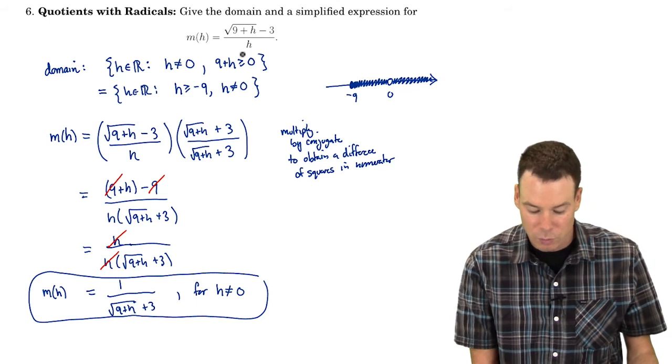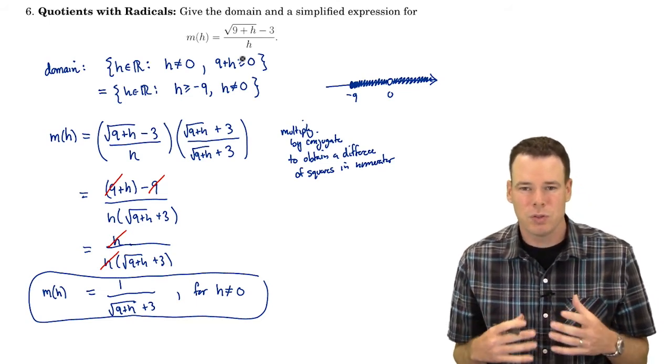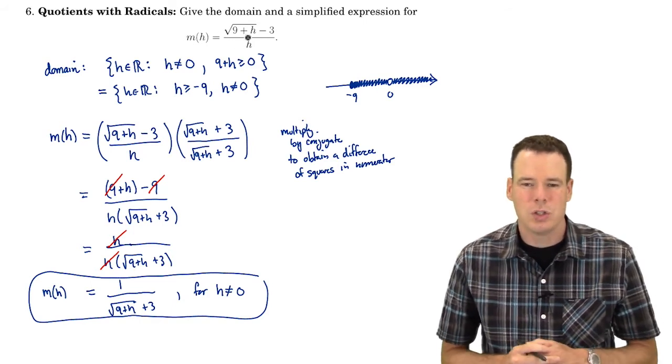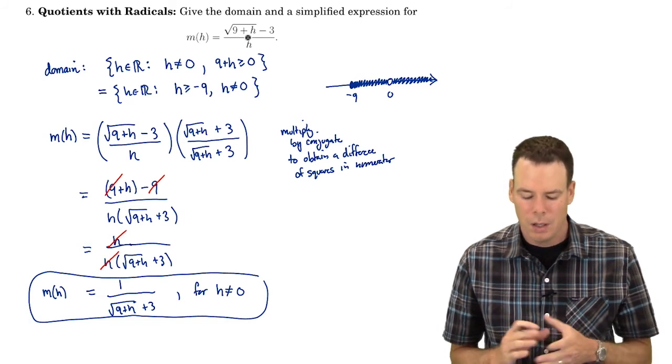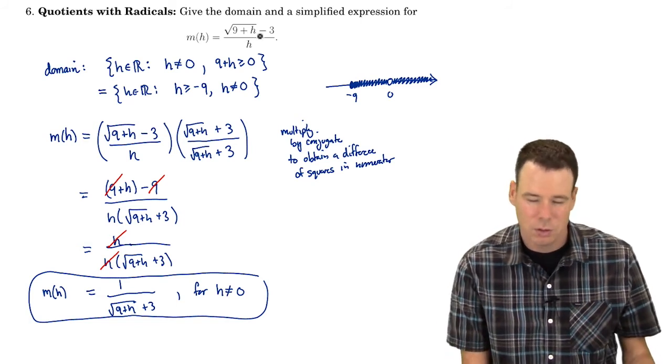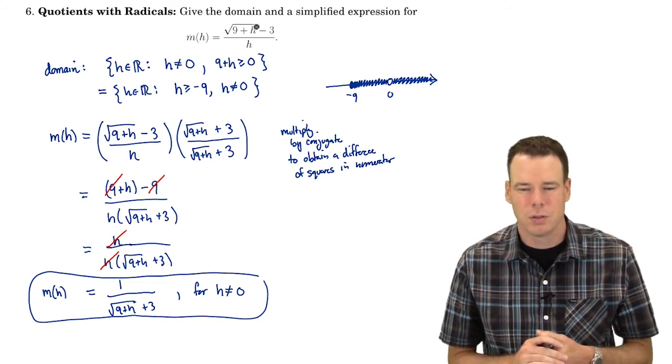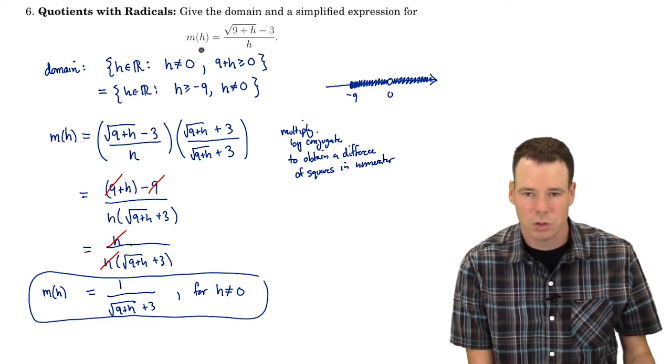And so the idea is the reason we want to do that the reason we're interested in simplification in this way is because we're interested in questions like okay I've got this function m what is it doing near zero? What are the function values near zero? I can't plug zero into it because it's not in the domain. But what is the function doing near zero? If I plug in values really close to zero what are the outputs of my function doing?